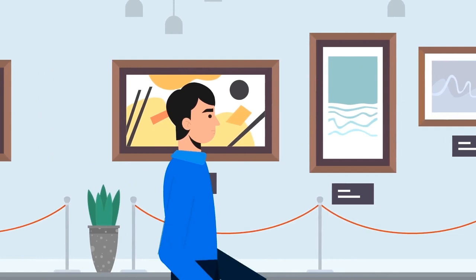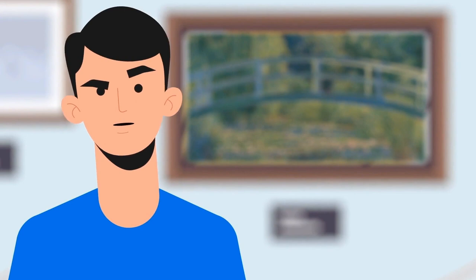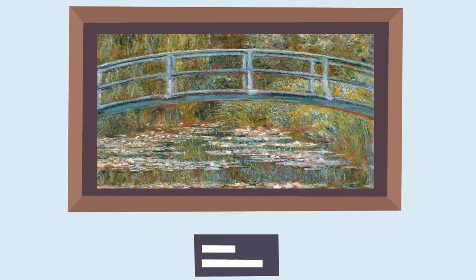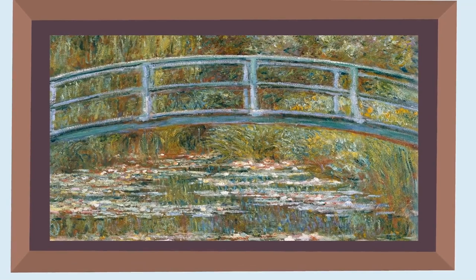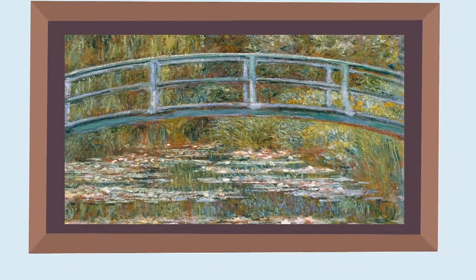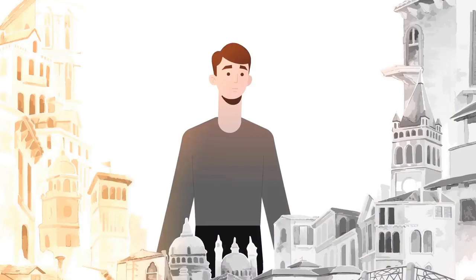You attend the latest impressionism exhibit and while walking around, a Monet painting of a pond with some water lilies from 1899 gets your attention, so you decide to take a few moments and stop in front of it. Now comes the time to breathe in and try to interpret this famous painting, but where do you start? Maybe you could focus on its colors and shapes, on how it makes you feel, or on the materials used for creating it.